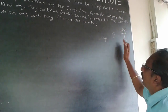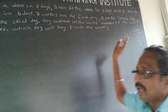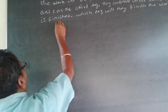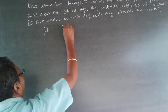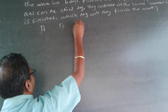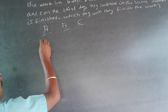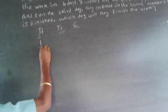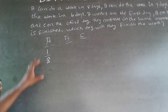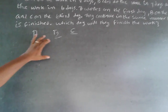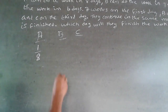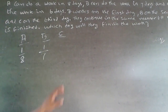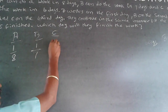If A can do the work in 8 days, in one day he will do 1/8 of the work. So: A does 1/8 of the work in one day, B does 1/7 in one day, and C does 1/6 in one day.